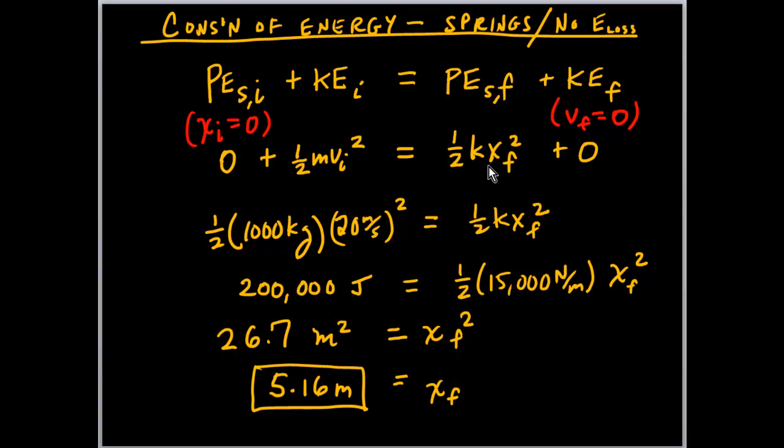One half mv squared equals one half kx squared. The quantity x final being what we want to find, the distance by which the spring is stretched. The hard part is over. We have k given, velocity initial given, mass given.